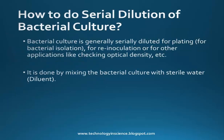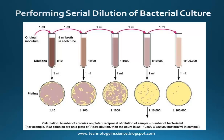Now let's look at serial dilution of a bacterial culture. Bacterial cultures are generally serially diluted for plating, especially for bacterial isolation, other culture techniques, re-inoculation, and checking optical density. This is done by mixing the bacterial culture with sterile water or another sterile diluent. The original inoculum is diluted 10-fold by adding 1 ml of culture to 9 ml of diluent.